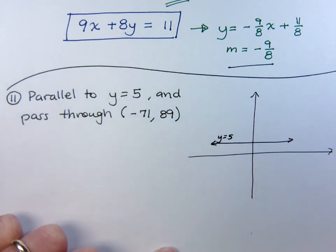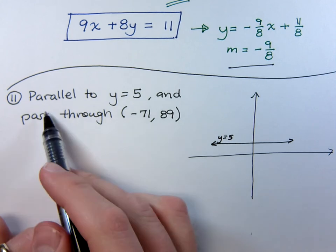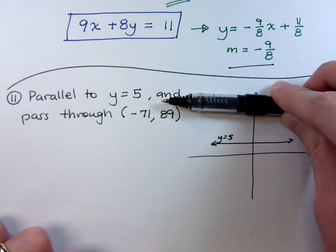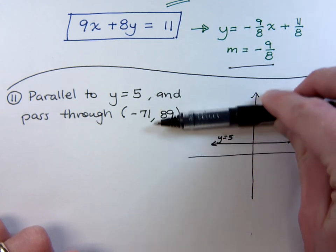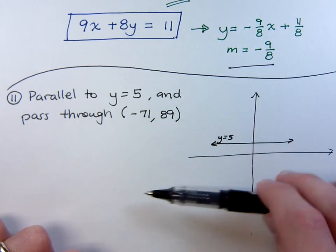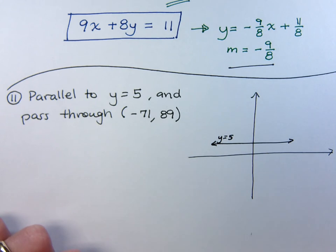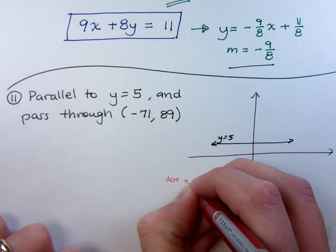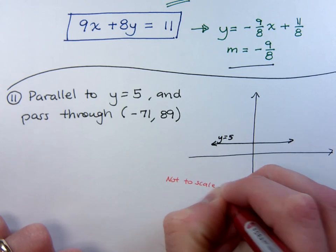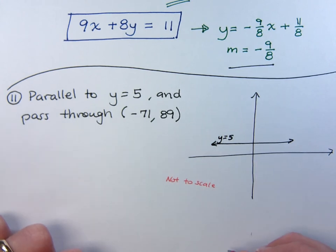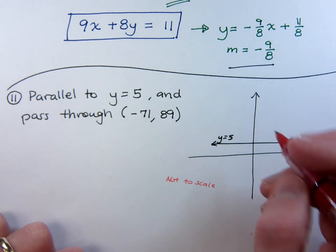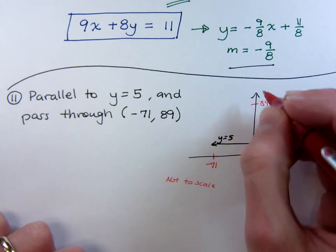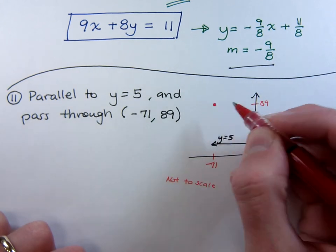Nothing fancy about that. Now, what does it mean to be parallel to a horizontal line? It means to be another horizontal line. You just have to figure out what that horizontal line is. Now, you need to go through the point negative 71 and 89. Now, please note that this is not to scale. It doesn't need to be. It's just trying to get you to understand the concept. If this is negative 71 and this is 89, for example, here is your ordered pair.